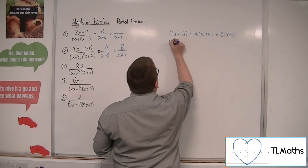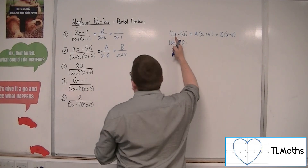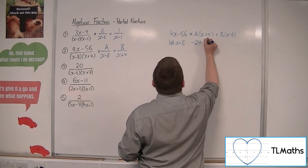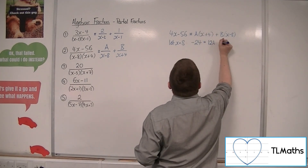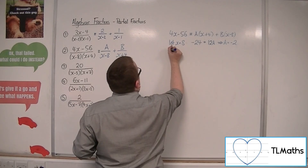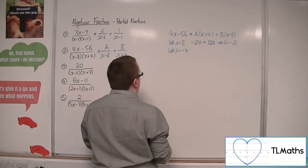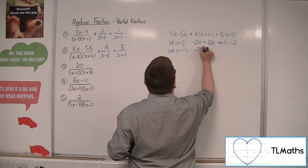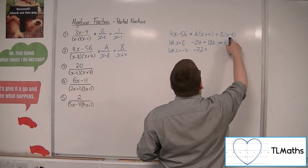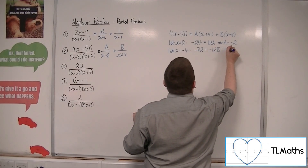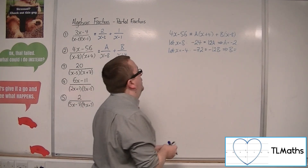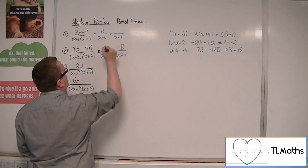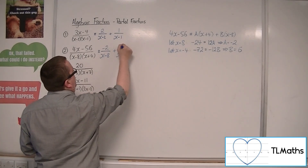If we let x be 8, then 4 times 8 take away 56 gives minus 24, and 8 plus 4 is 12, so 12A. So A must be minus 2. If we let x be minus 4, we get 4 times minus 4 take away 56, which gives minus 72, and minus 4 take away 8 is minus 12B. Dividing minus 72 by 12 gives 6. So A is minus 2, B is 6, giving minus 2/(x - 8) plus 6/(x + 4).